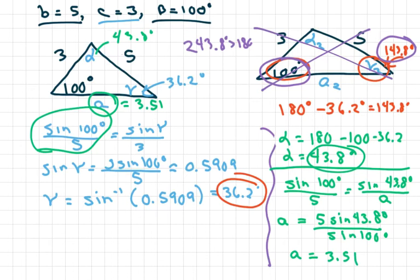The next video I'm going to do is an introduction with examples of the ambiguous case of the law of sines where there's no solution — no triangles at all. Thank you and have a nice day.